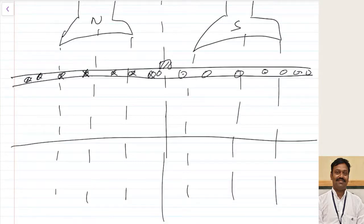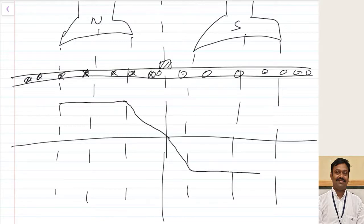We have seen this is the MMF wave. Up to here the flux will be linear, and after this, as the reluctance increases, the armature flux will change accordingly. It will be constant, then change again at the brush axis. This is the armature flux. I am going fast because this is already discussed.